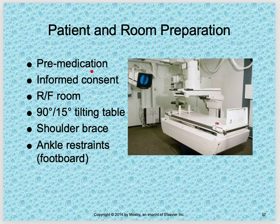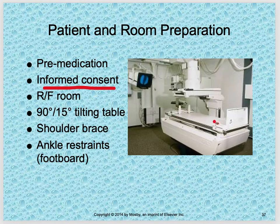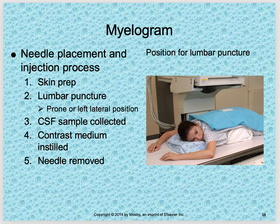Patient and room preparation: pre-medication is usually given for lumbar punctures, and an informed consent is filled out — usually by a nurse. The fluoroscopy room requires a tilting table capable of 90 to 15 degree tilt, shoulder braces, and ankle restraints on the footboard to secure the patient. The patient will be tilted Trendelenburg to get the iodinated contrast to flow toward the C-spine and T-spine.